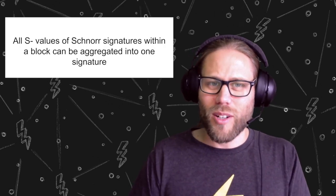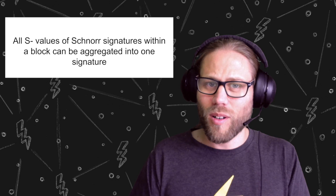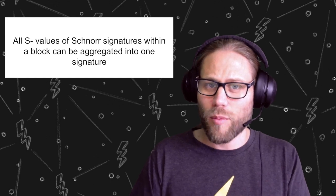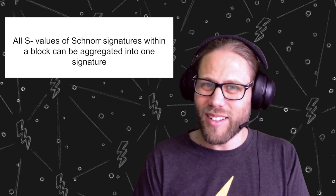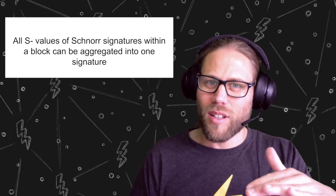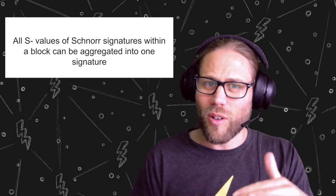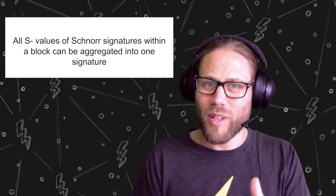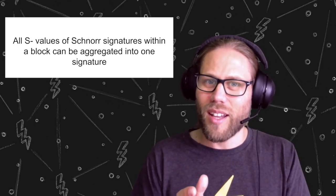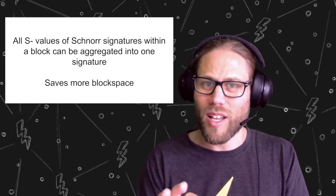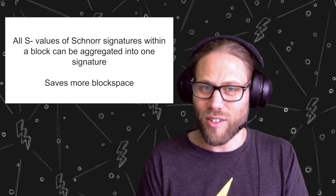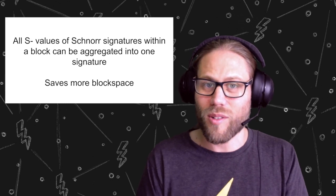You can also do this with all the transactions in one block. So let's assume that all transactions in a block are actually transactions coming from Schnorr signatures. What miners could do is while mining a new block they could squeeze basically all signatures, all the s values of signatures, into one big aggregated signature and save a lot of extra block space because now we would only have to store the r values of the signatures and not the s values anymore, and this is also really great.